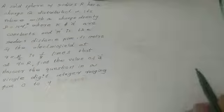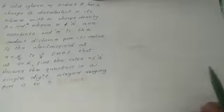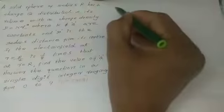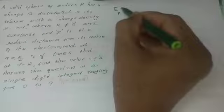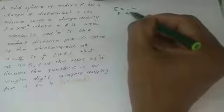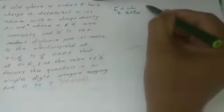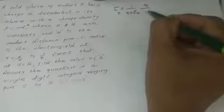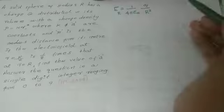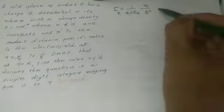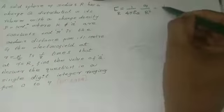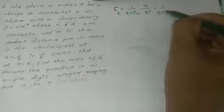So the electric field at a distance from the center of the sphere is given by E_r equals 1 over 4 pi epsilon 0 Q divided by r squared.